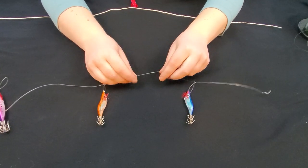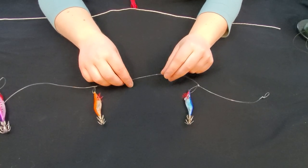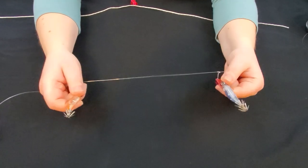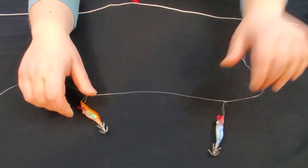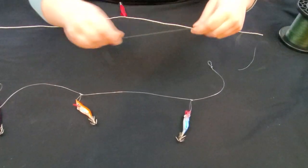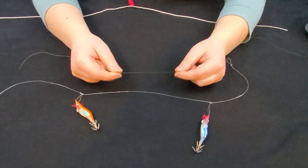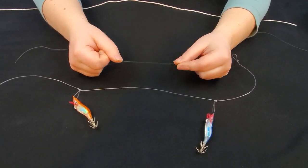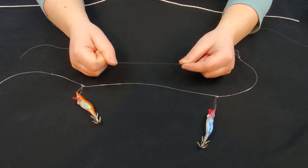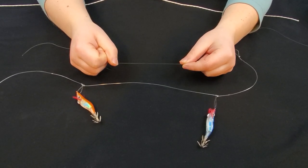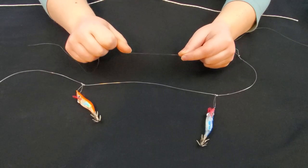For the leader, I use the monofilament because it's a little bit stiffer and it helps maintain the spacing between the jigs. But for the main line, I use braided line because there's no stretch in it, so you can feel the squid hit your jigs down there because this line is so sensitive.